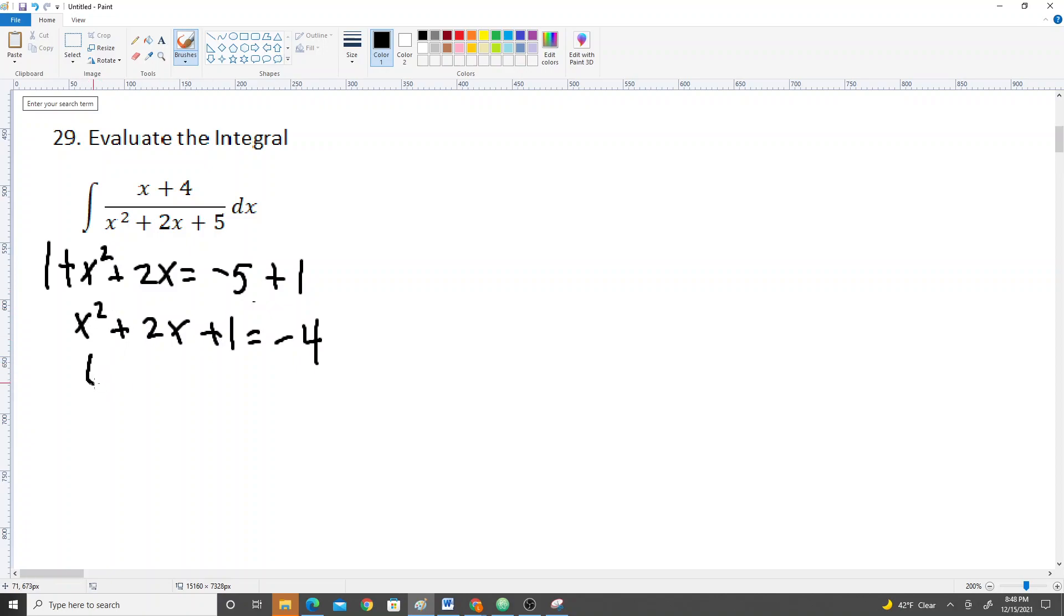x squared plus 2x plus 1, we can rewrite that as x plus 1 squared after we factor it, and then add 4 to both sides. This is going to be, then right here you're going to have 5.